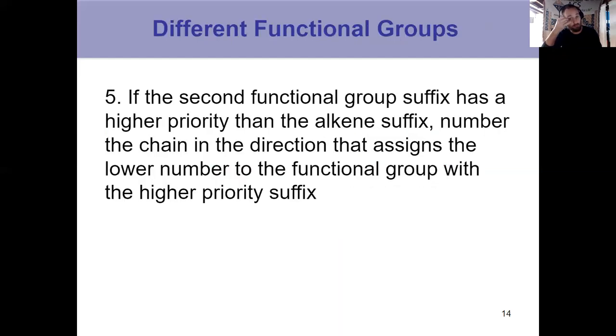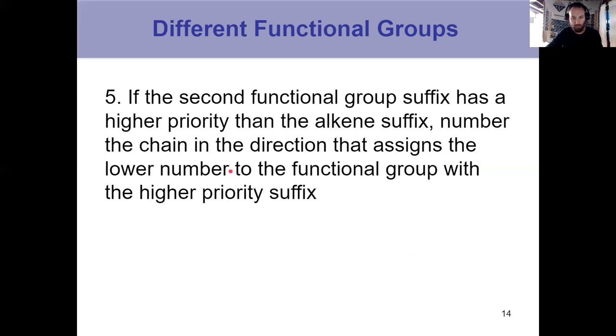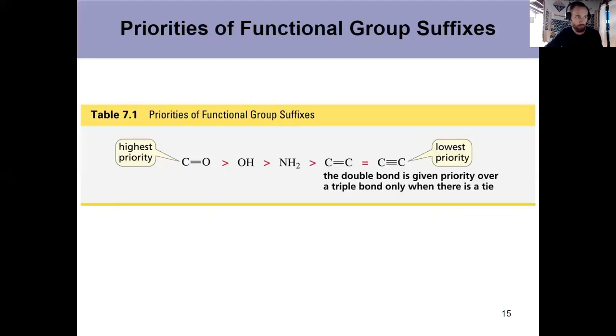And our final rule, the one we're going to encounter most often, if we have a second functional group with a higher priority than an alkene suffix, and you'll see what I mean on the next slide with regard to priority, you number the chain in whatever direction assigns the lower number to the functional group that has the higher priority suffix. So to say that differently, look at this table here, 7.1 from your textbook. You have to know this for nomenclature.